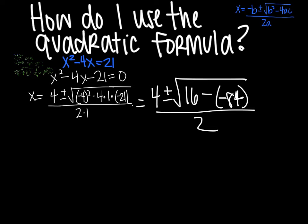And simplify it even further now. And I have subtracting a negative, which is basically adding. It turns to a big positive. So I have 16 plus 84. And I get 4 plus or minus the square root of 100 all divided by 2.